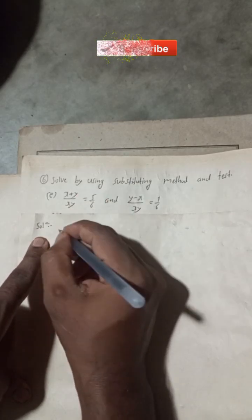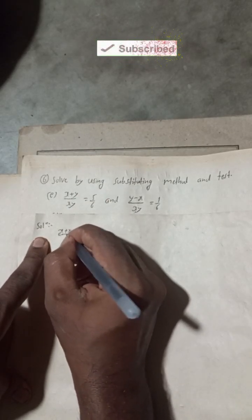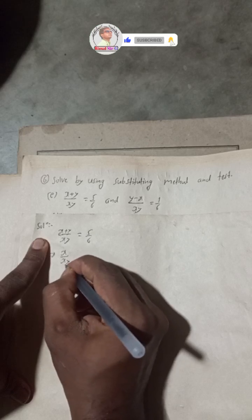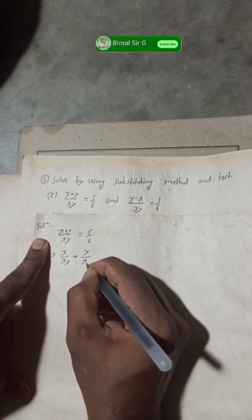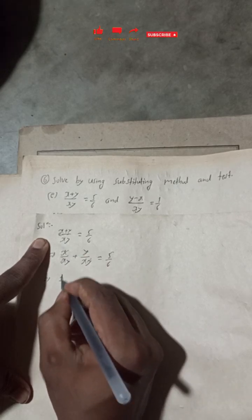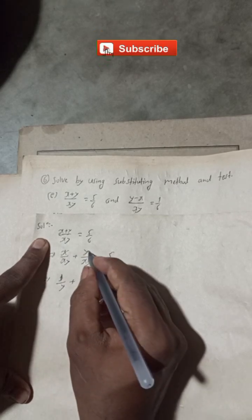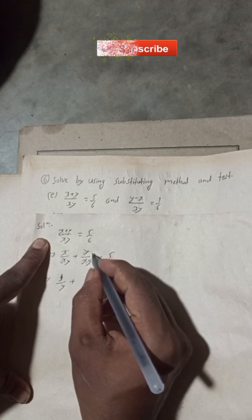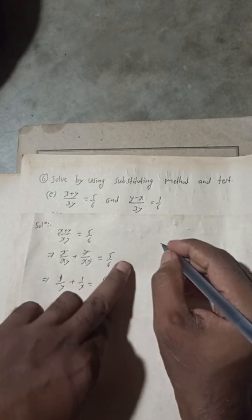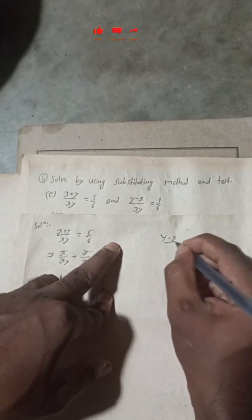Take the first equation: (x + y) / xy = 5/6. Split this as x/xy + y/xy = 5/6. The x's cancel and y's cancel at the numerator, giving us 1/y + 1/x = 5/6.